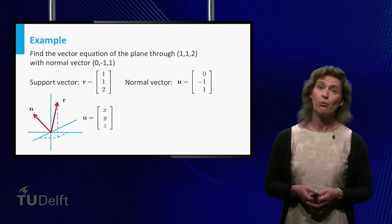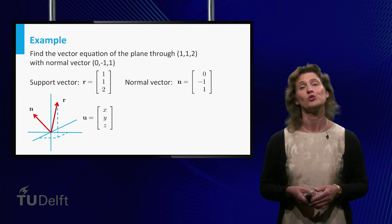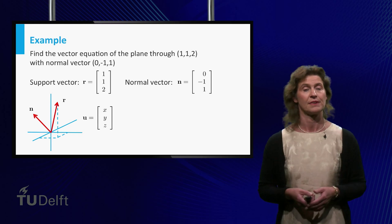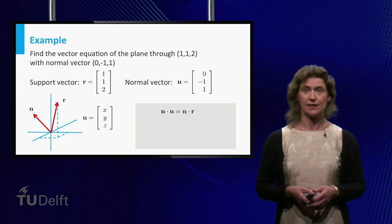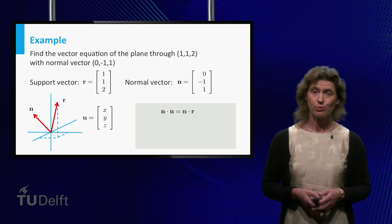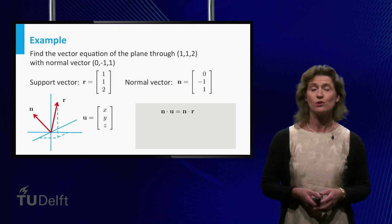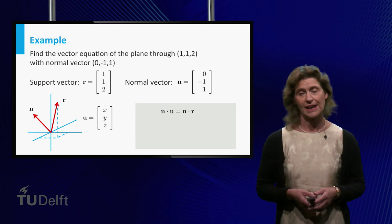Now let's set the components of a vector u in the plane to be x, y, z. Then the vector equation of the plane is the dot product of n and u equals the dot product of n with r.